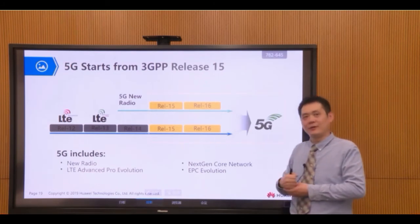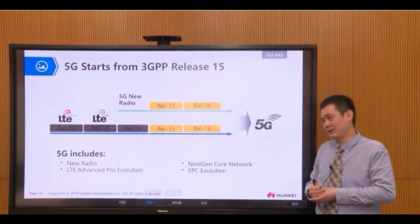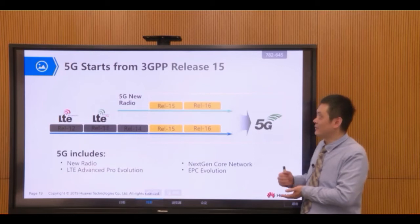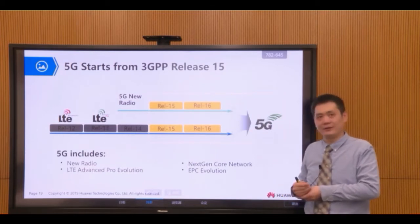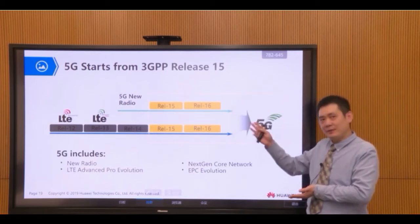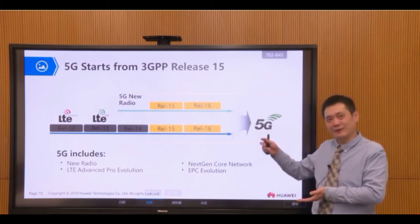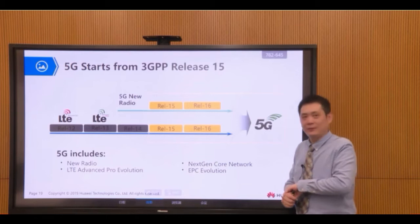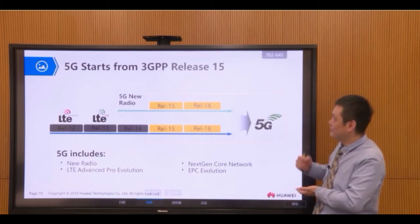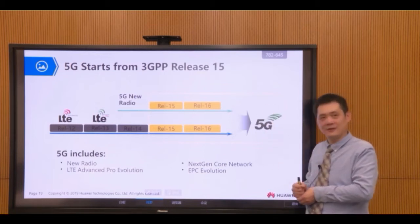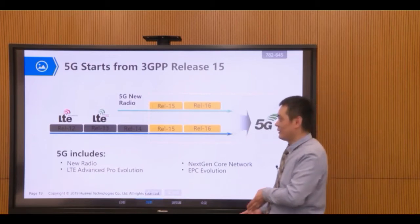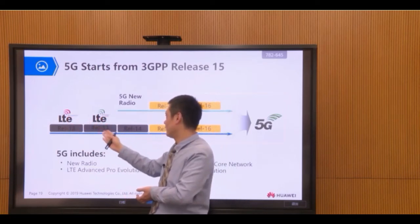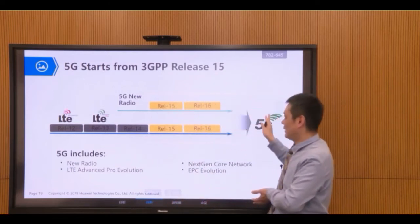The 3GPP focuses on standardization for mobile communication. The famous 3G specification UMTS was composed by 3GPP, and 4G LTE is also a result from 3GPP. Currently, 3GPP is working on 5G and even future 6G. About 5G, we can say it starts from 3GPP specification Release 15. Looking at the release picture, Releases 12, 13, and 14 are for LTE — LTE Advanced and LTE Advanced Pro.